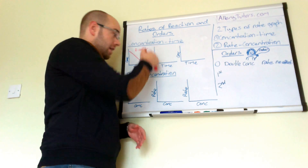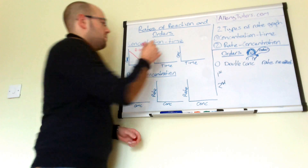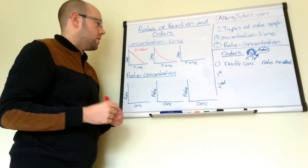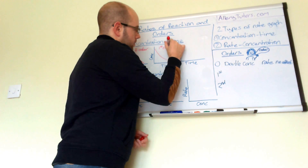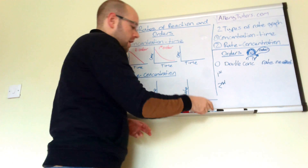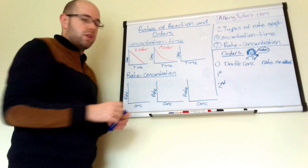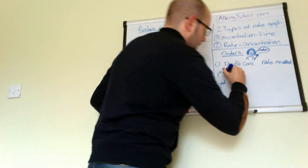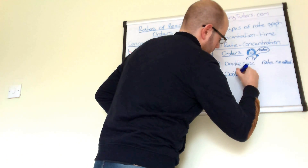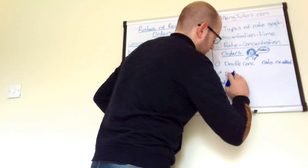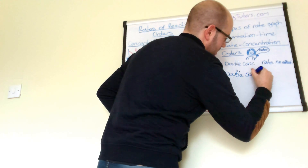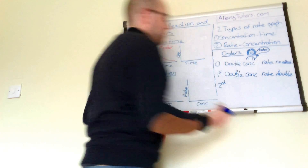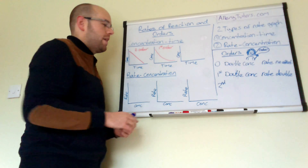Another graph: if we do concentration against time and we get a graph that's slightly curved rather than a straight line, we call this first order. First order is basically where if we take a substance and double its concentration, the rate increases by the same amount — so if we double the concentration, our rate should also double. That means a reaction is first order, and we get a curved shape like that.